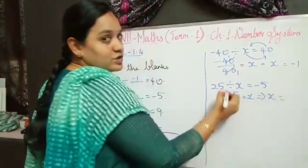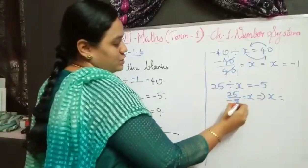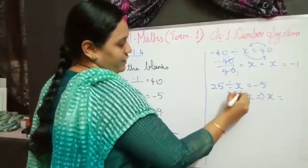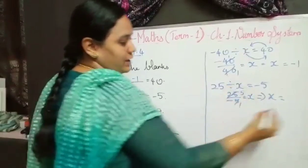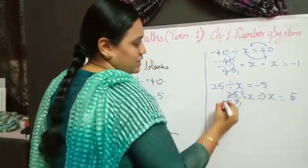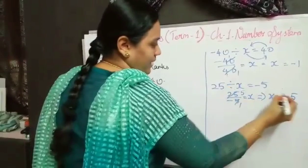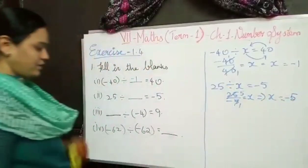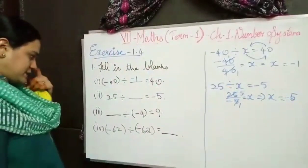We can cancel these two numbers. 5 fives are 25, so 5 is my answer. Different sign, so minus 5. Next, the third problem: x divided by minus 4 equals 9.